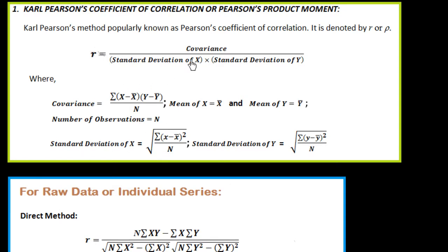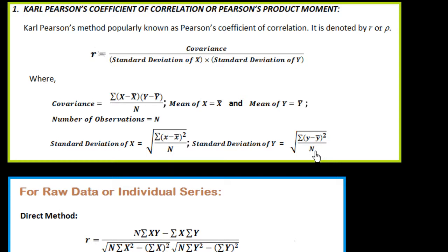In the denominator, there is the standard deviation of x and standard deviation of y. The standard deviation of x is equal to the square root of summation of (x minus x-bar) whole square over n. The standard deviation of y is equal to the square root of summation of (y minus y-bar) whole square over n. This is the basic concept behind Karl-Pearson's coefficient of correlation.